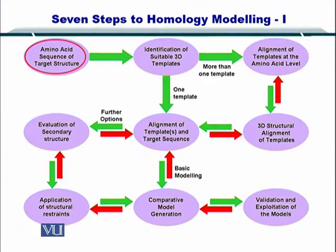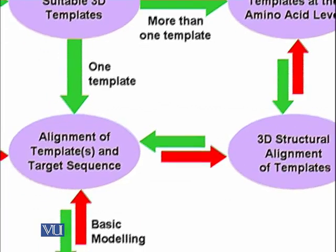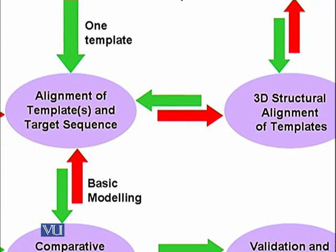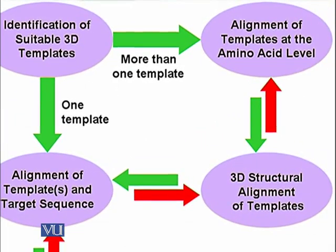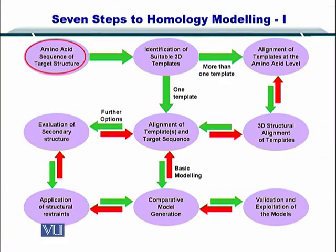This is followed by listing down the templates. There can be two cases: one in which you find only one template, and another in which you find multiple templates. In case you have a single template from the PDB, you align the template and target sequence and then go for 3D structure alignment. But if you have more than one template, you must align all templates at the amino acid level and then perform the 3D structure alignment, repeating this loop for each structural prediction depending on how many templates you had.